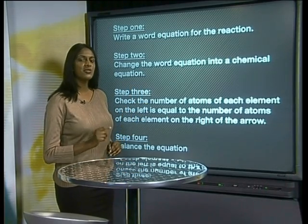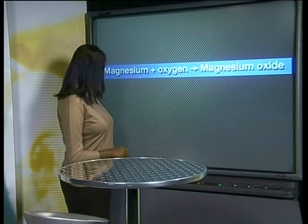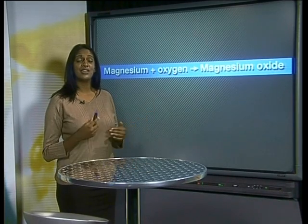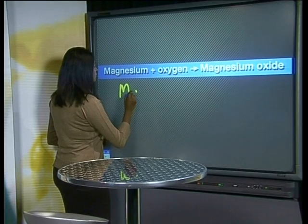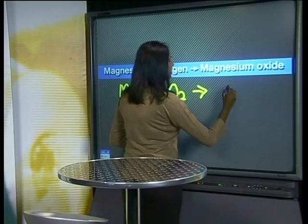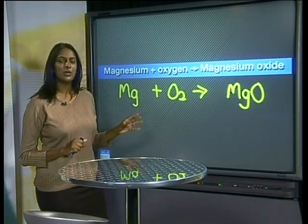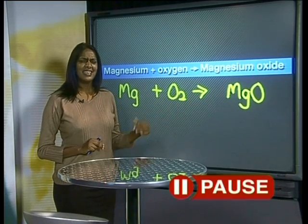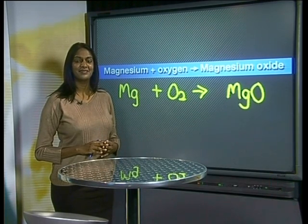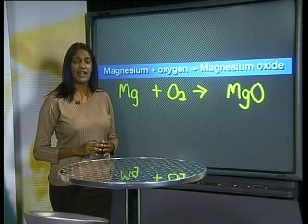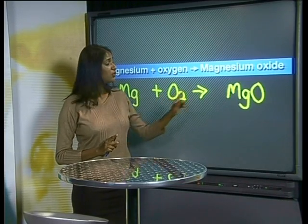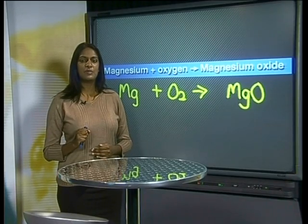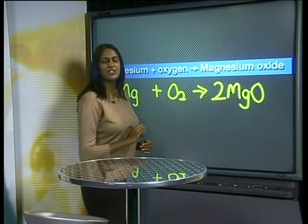While these steps are fresh in your memory, let's write the chemical equation for magnesium together. The word equation for this reaction is: magnesium plus oxygen reacts to form magnesium oxide. We can translate from words into chemical symbols by writing Mg + O₂ → MgO. From this equation we can see that one magnesium atom reacts with one oxygen atom to form one particle of magnesium oxide. Does this accurately represent the chemical change taking place? No, this equation is not balanced. There are two oxygen atoms on the left of the equation and only one on the right.